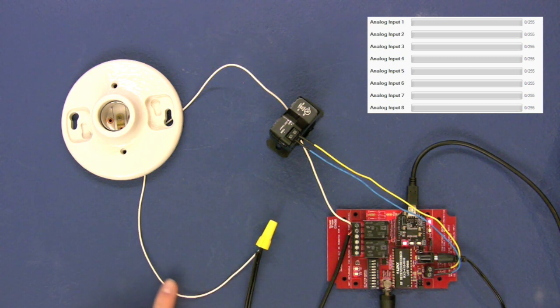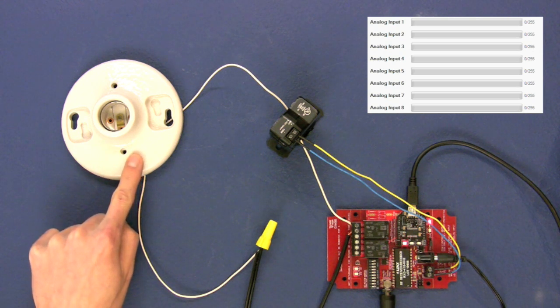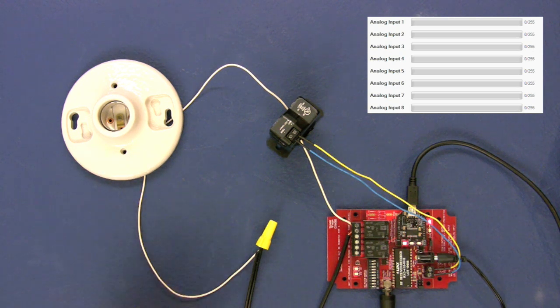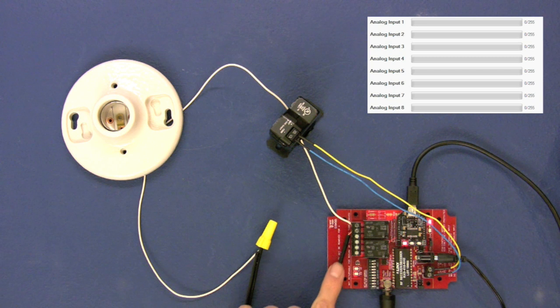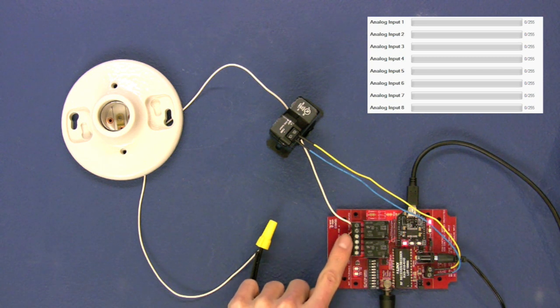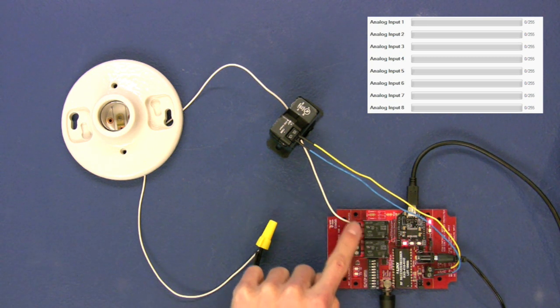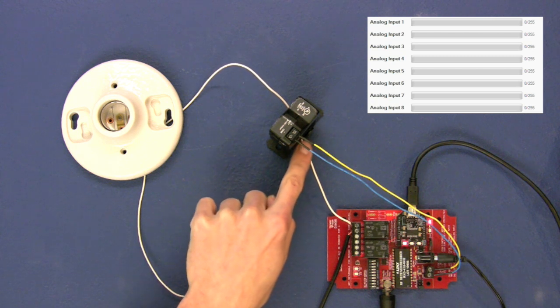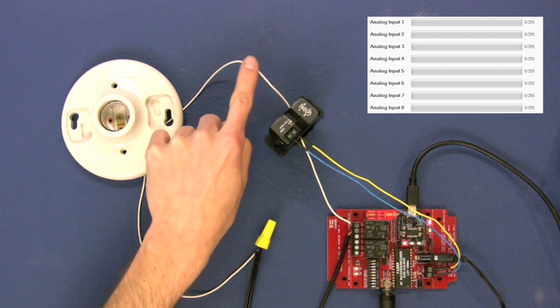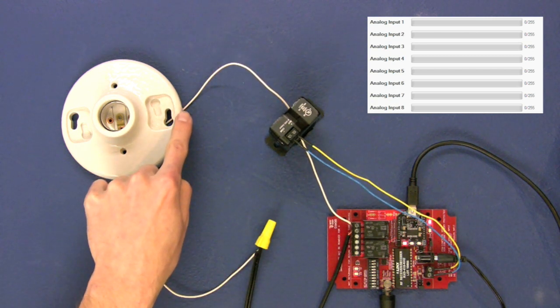You'll see we have one leg of our AC power connected directly to the light bulb. This is the neutral line. The second line, which is the power line, is connected to the common of our relay. Then the normally open of our relay runs through the current sensor and to the light bulb.